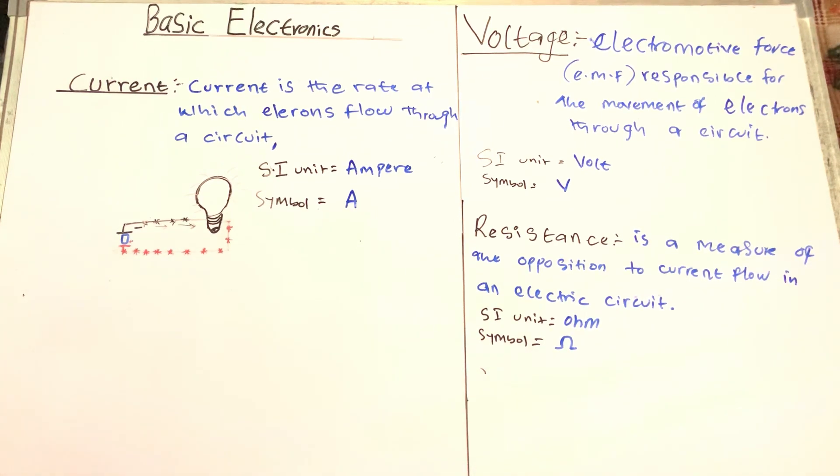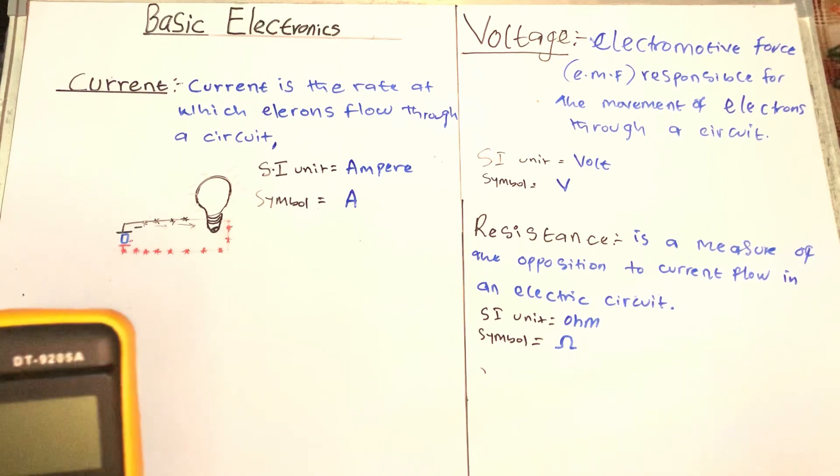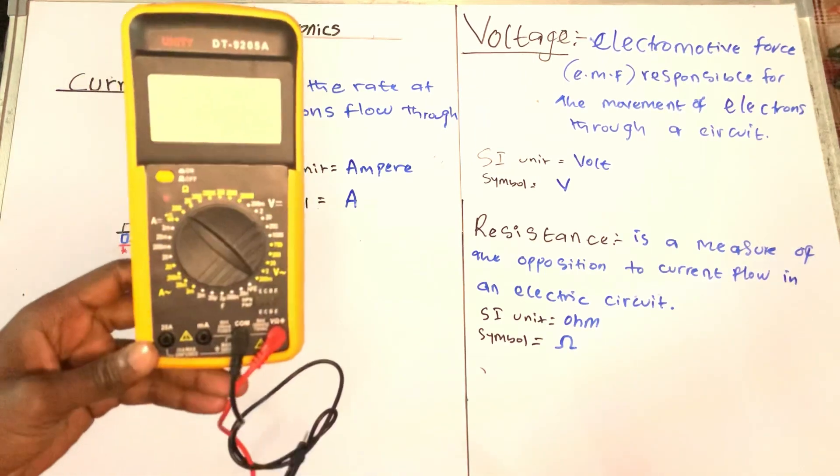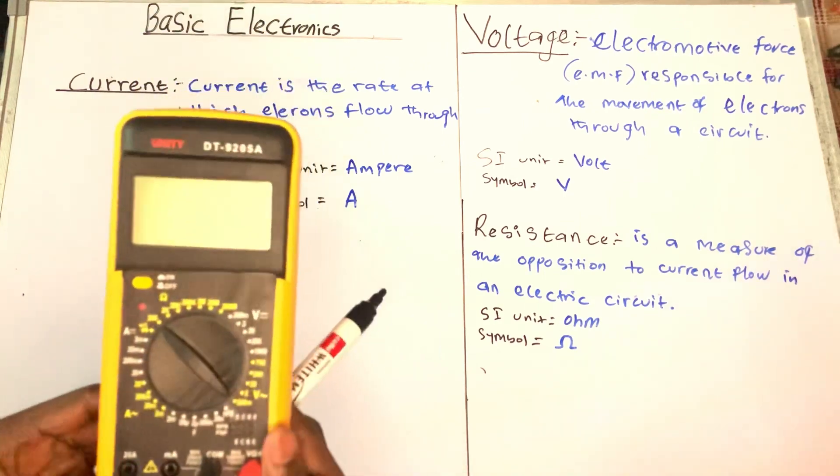And the SI unit of current is ampere, and the symbol as you can see is A. For example, whenever you see a medical device where you see a symbol illustrated as mA or just A, it simply means ampere, and it denotes current.